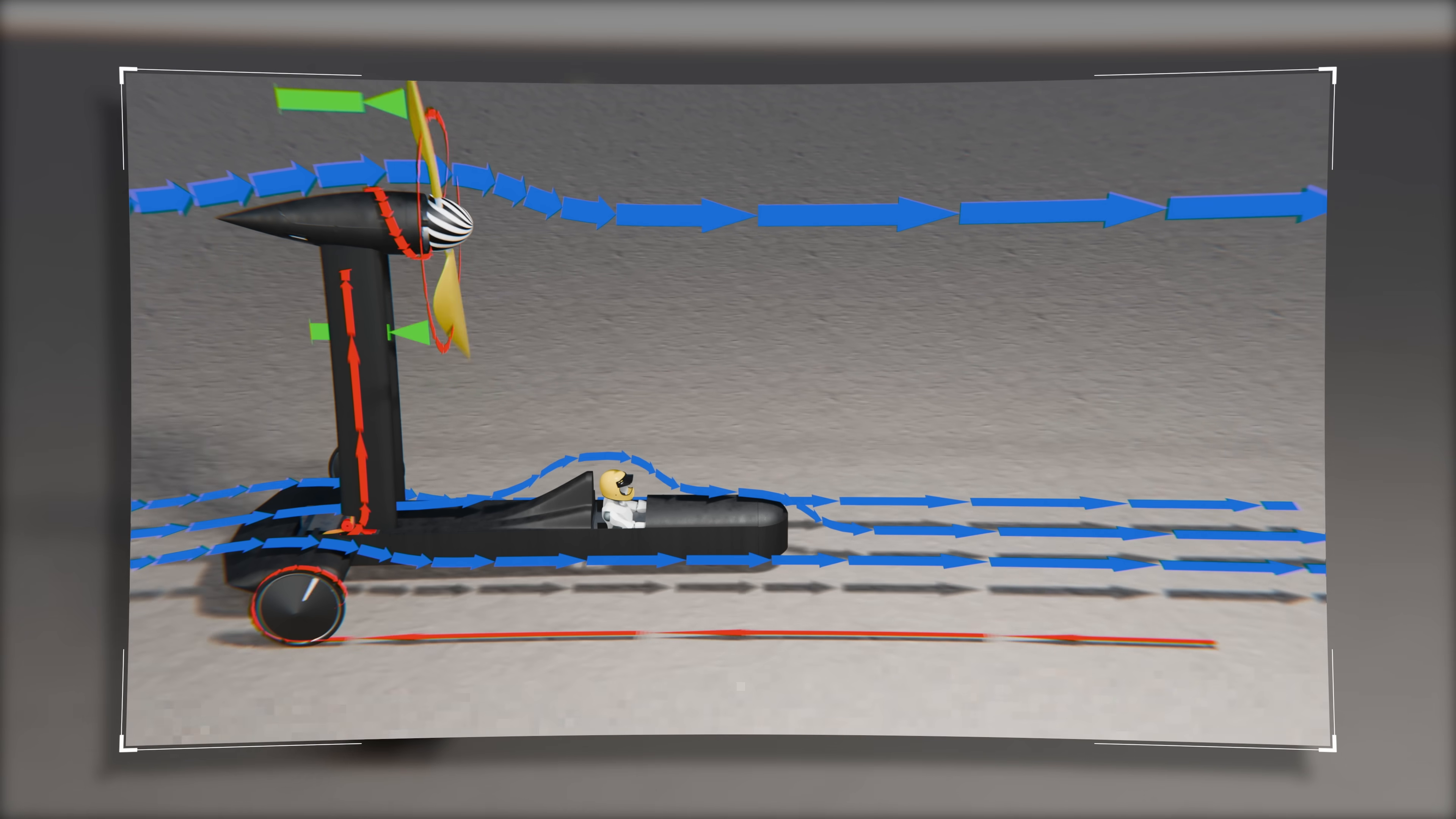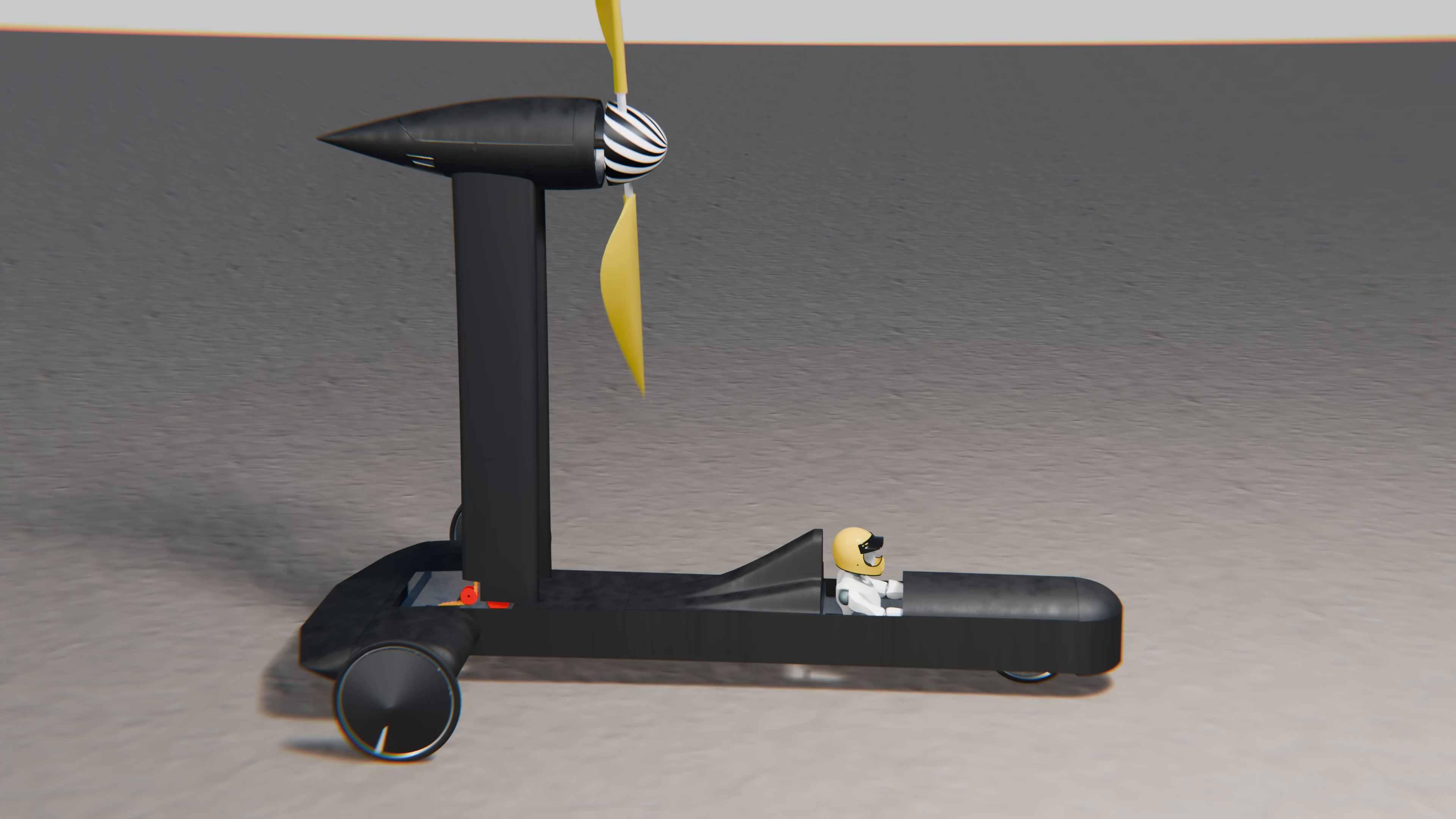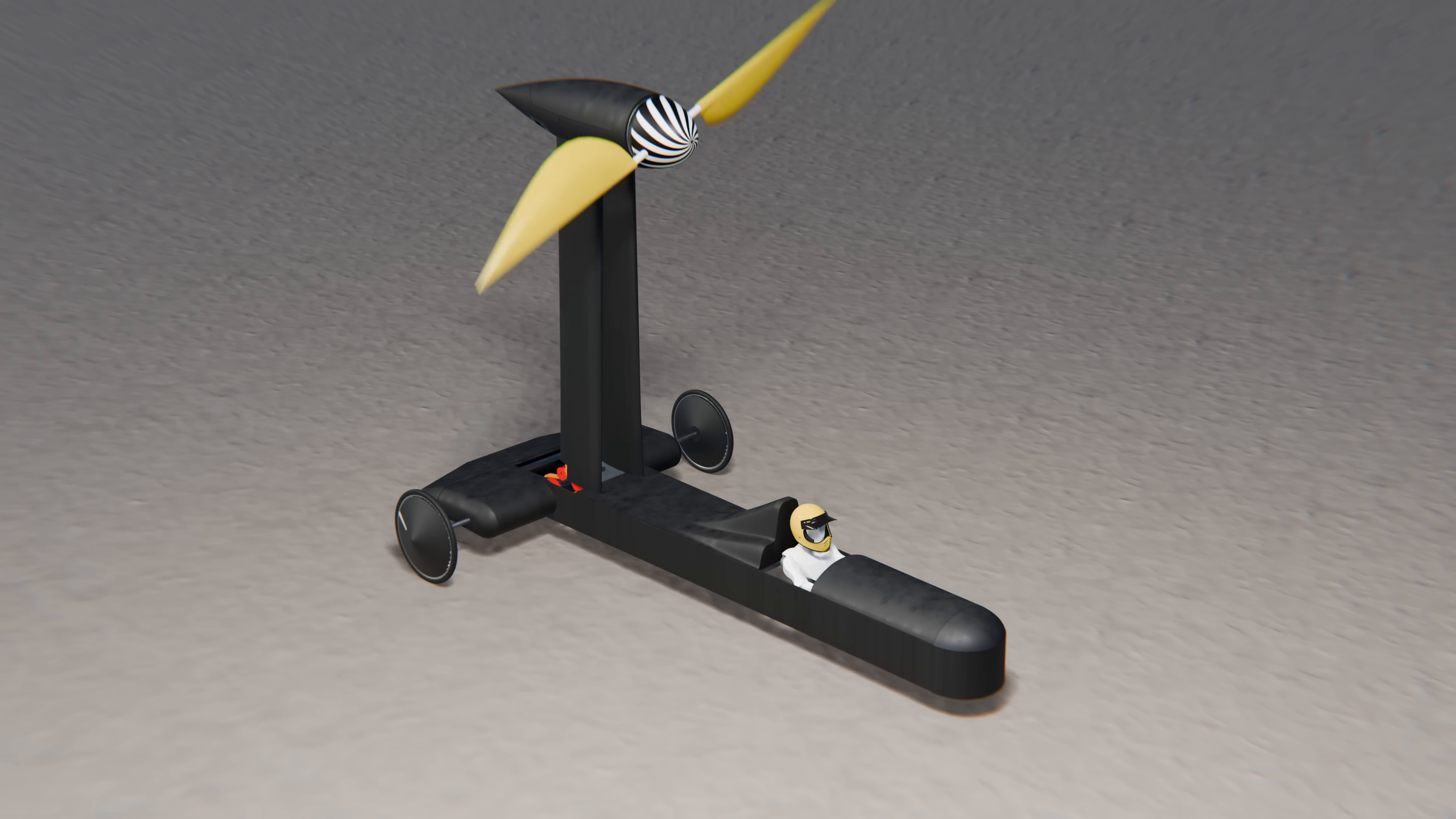This is why a lot of people thought of the Blackbird as a perpetual motion machine. Intuition leads you to think that the propeller and the wheels are extracting energy from each other, which is nonsense. This is just a clever exploitation of relative motion, ground contact and air drag. It looks like a magic trick, but it's just Newton's laws at work.